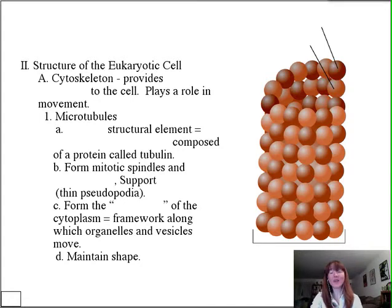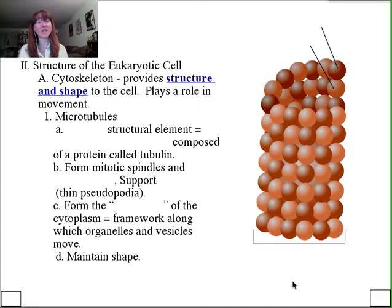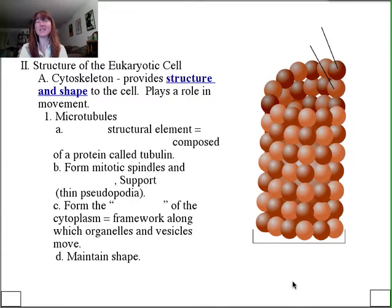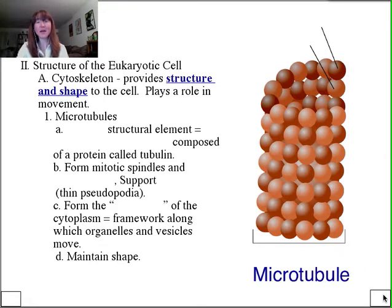The cytoskeleton provides structure and shape to the cell and plays a role in movement. We can split it into three components: a large component, a medium component, and a very tiny component. Let's begin with the large one — the microtubule. Microtubules are the largest of the three, about 25 nanometers in diameter.